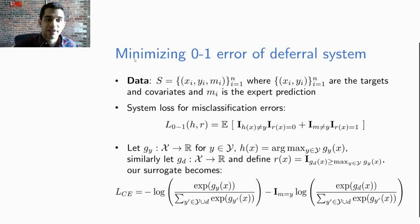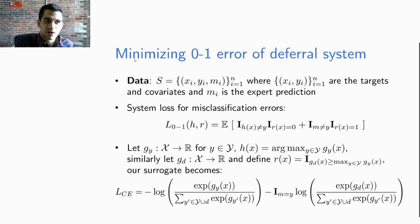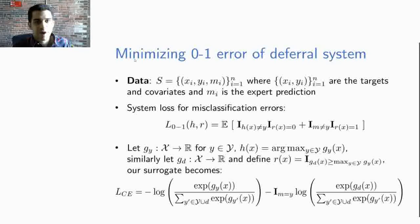This is to make things as a multi-class problem that is augmented with the additional class of deferral. And now the surrogate that we previously introduced tilde L_CE becomes the loss L_CE and is made of two terms. The first term makes sure that the classifier fits the target. This is really the cross entropy loss however we're normalizing by the additional function g_d. The second term only appears on examples where the expert is correct when m_i is equal to y_i. And this term encourages the system to defer to the expert instead of predicting the target.